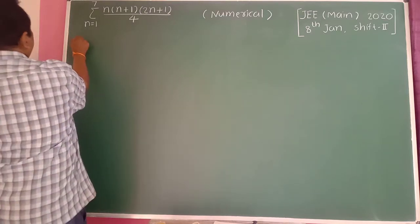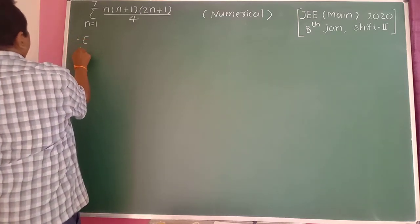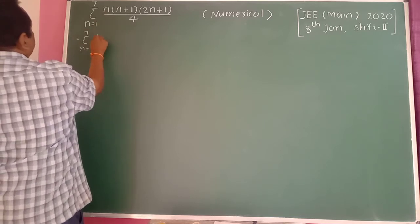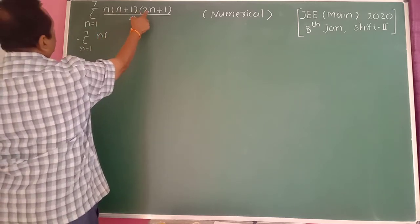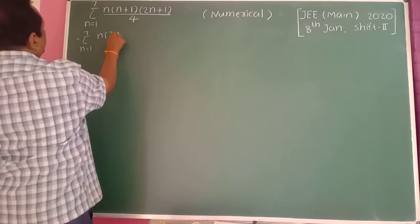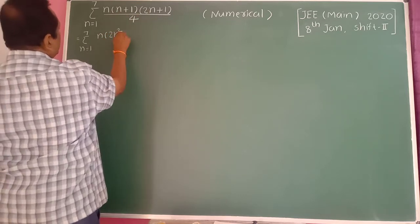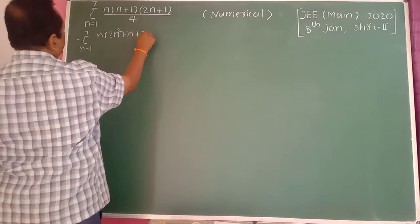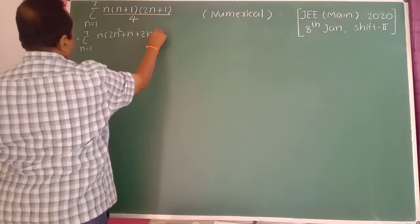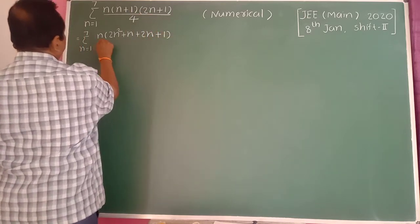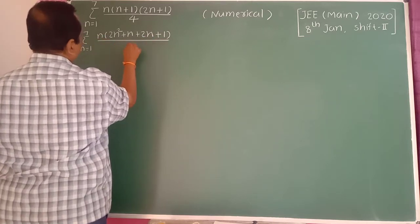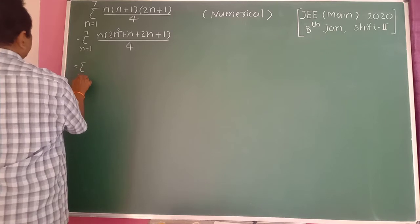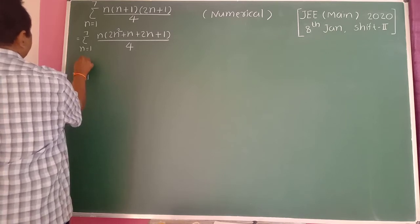Therefore, this equals summation from n equal to 1 to 7 of the expanded form. Multiplying out: n into 2n gives 2n squared, n into 1 gives n, 1 into 2n gives 2n, and 1 ones are 1, all divided by 4.